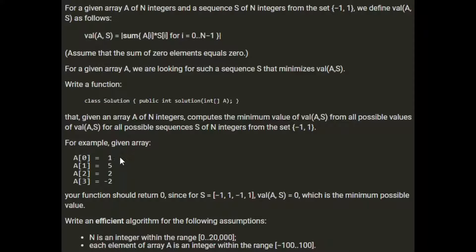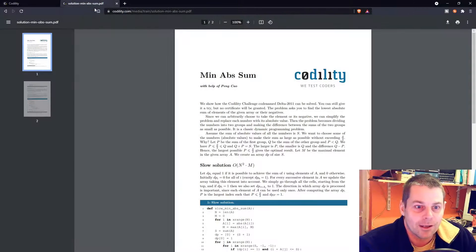For example, given the array [1, 5, 2, -2], the function should return 0, since for S = [-1, 1, -1, 1], val(A, S) is 0, which is the minimum possible value. N is an integer within the range 0 to 20,000 and each element of array A is within the range of -100 to 100.